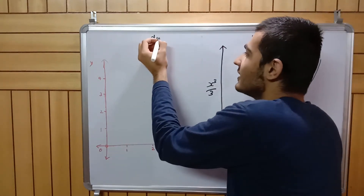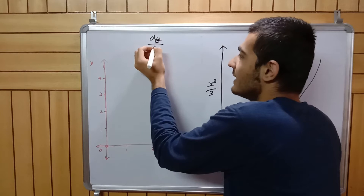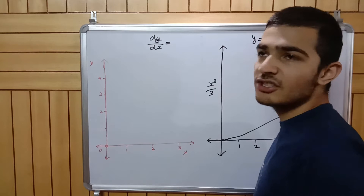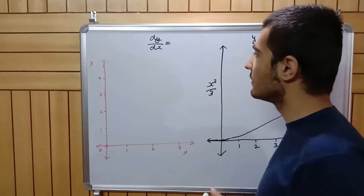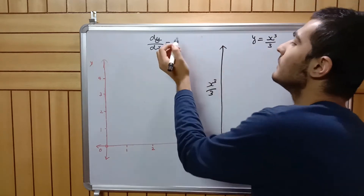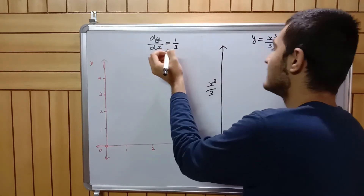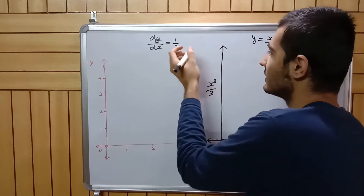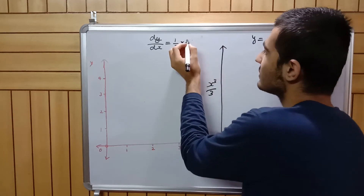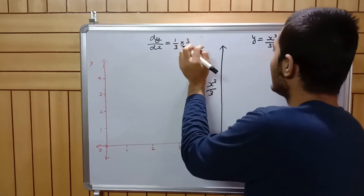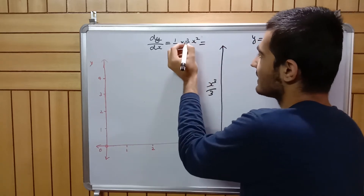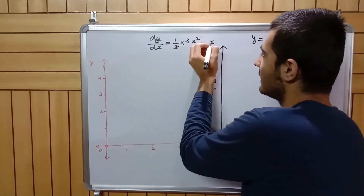I differentiate to get dy/dx. If you're uncomfortable with differentiation, watch my earlier video on differentiation of polynomials and the power rule. I keep the coefficient one-third as is. For x cubed, I apply the power rule: bring down the 3 as a coefficient and reduce the power by one to get x squared. The threes cancel and I end up with dy/dx equals x squared.